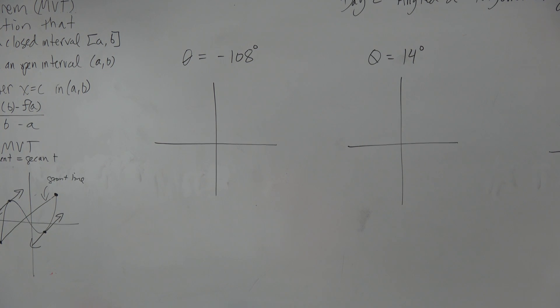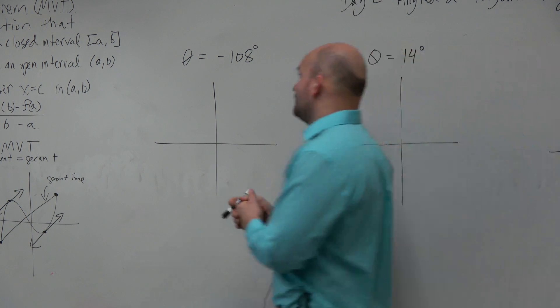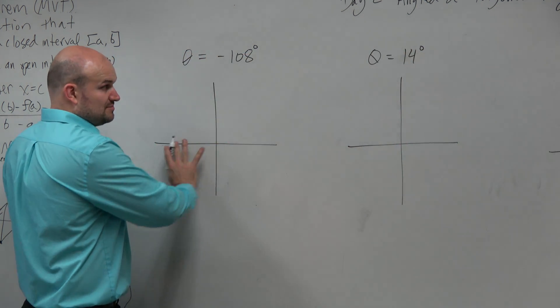If we want to graph theta equals negative 108 degrees, the main important thing is we see that this is a negative angle. So this is in standard form.